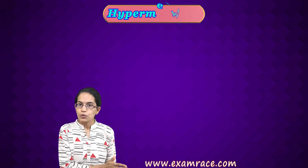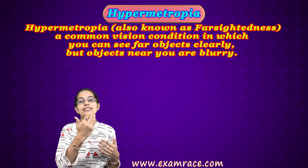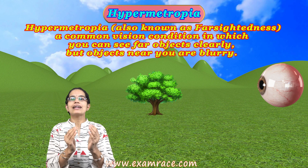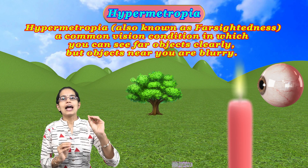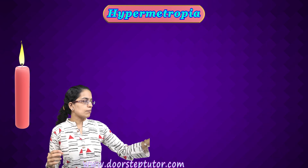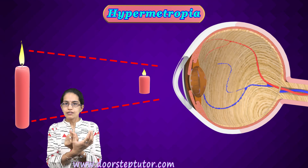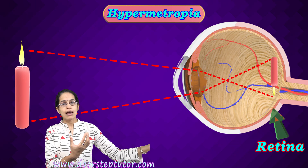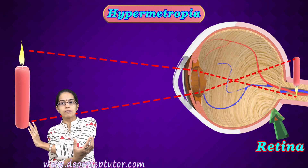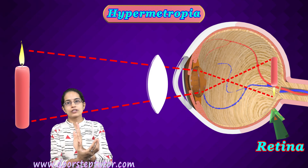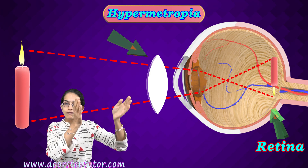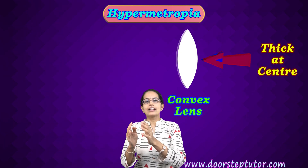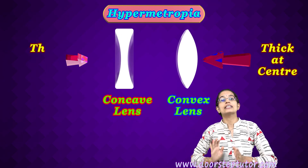If you are having problems with near vision, it is known as hypermetropia, which means farsightedness. The images in far areas are clearly visible but the near images are not. With hypermetropia, the image falls behind the retina, so correction is required to bring the image back to the retina, and for that, a convex lens is used. Convex lens is thick at the center, while concave lens is thinner at the center.